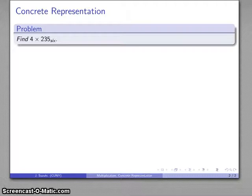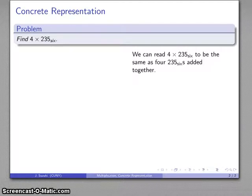Let's consider the problem: find 4 × 235 base 6. We're working in base 6, which means 6 of something will be the next larger unit. I can read this problem as taking 4 of 235 base 6 and adding them all together.